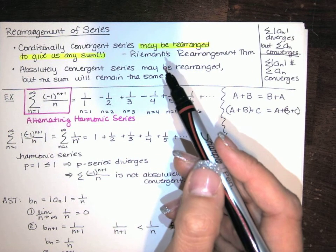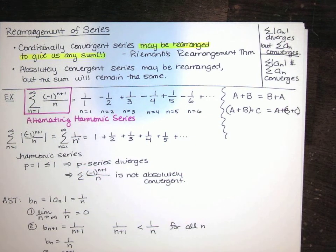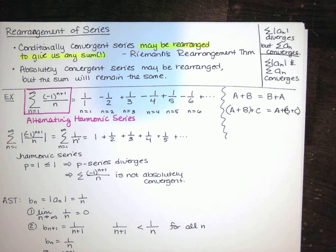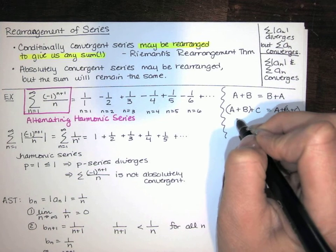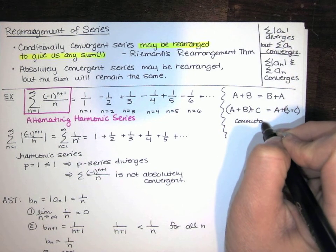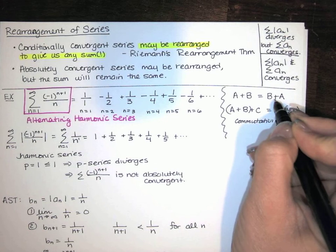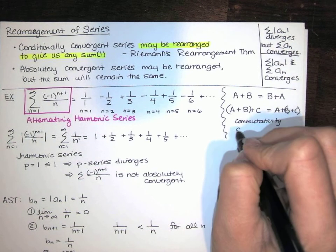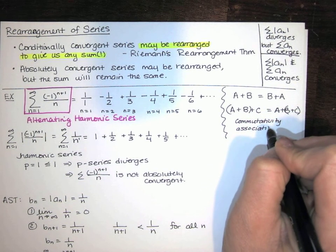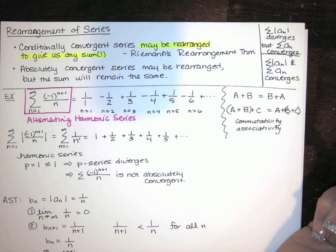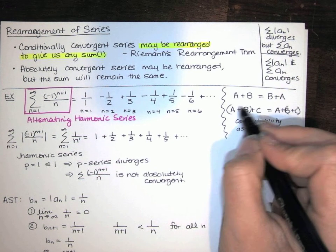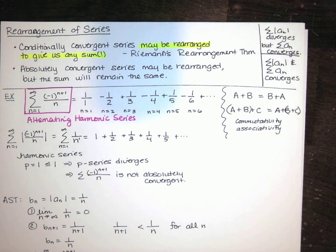So I think that's just pretty cool. Absolutely convergent series — no matter how you rearrange them — you're always going to get the same value. With this rearrangement of series, you see that infinite addition is not the same as finite addition. Finite addition follows some nice rules called commutativity — you can add in any order you want — and associativity — you can group in any way that you want. Either way, you're going to get the same answer.